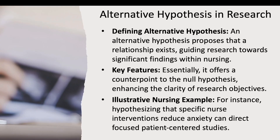An alternative hypothesis proposes that a relationship exists, guiding research towards significant findings within nursing. It offers a counterpoint to the null hypothesis, enhancing the clarity of research objectives. For instance, hypothesizing that a specific nurse intervention reduces anxiety can direct focus toward patient-centered studies.